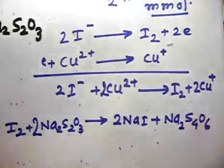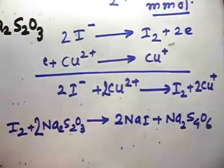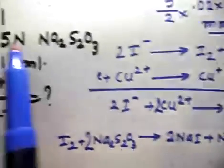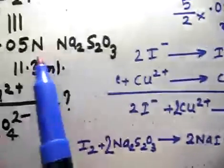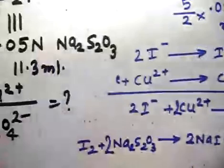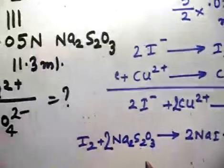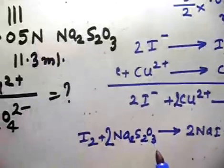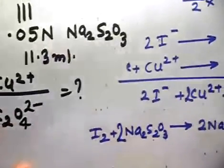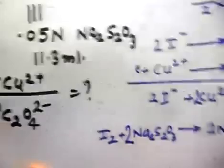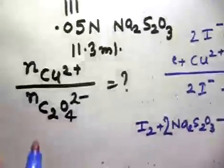The normality of Na₂S₂O₃: in this reaction, the N-factor of S₂O₃²⁻ is only 1. This is because 2 moles of S₂O₃²⁻ lose 2 moles of electrons, so 1 mole loses 1 mole of electrons. Therefore the N-factor for S₂O₃²⁻ is 1.